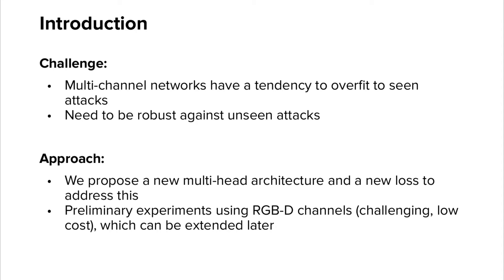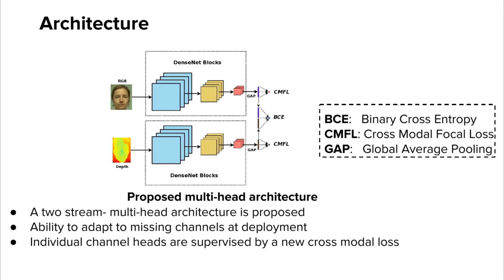Our preliminary experiments are done using RGBD, which can be extended to other combinations as well. This is the multi-stream multi-head architecture we proposed. The architecture of the individual branches is based on DenseNet. For the RGBD case, it's a two-stream network with multi-head architecture. Individual channel heads are supervised by the new cross-model focal loss, and the joint branch is supervised by binary cross-entropy. Instead of one final node, we have three, which forces the network to use the maximum discriminative information from each channel. In the inference stage, the final score is obtained from the joint branch.